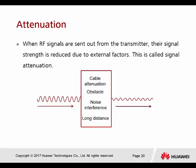Attenuation: when radio frequency signals are sent from the transmitter, their signal strength is reduced due to external factors. Attenuation is caused by several reasons: first, the cable — depending on how long the cable is; second, obstacles — objects blocking between the transmitter and receiver; third, noise interference — wireless signals from Bluetooth, infrared, and cell phones broadcasting signals also cause interference; and fourth, long distance — the farther you are from the access point, the more attenuation occurs.